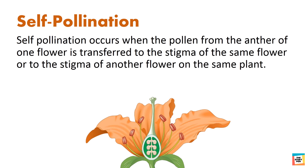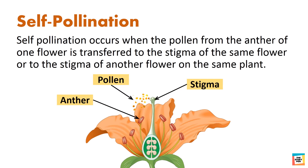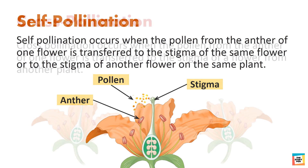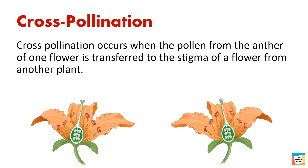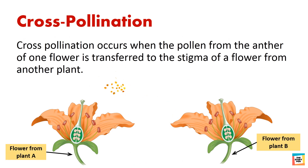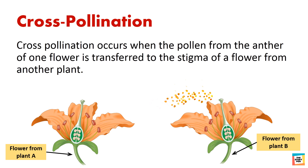Self-pollination occurs when the pollen from the anther of one flower is transferred to the stigma of the same flower, or to the stigma of another flower on the same plant. Cross-pollination occurs when the pollen from the anther of one flower is transferred to the stigma of a flower from another plant.